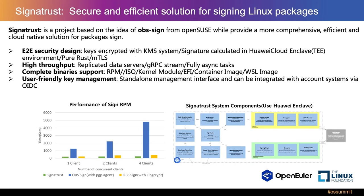Thank you Zhongjun for the excellent content. Now let me bring you to another new project in the community that we are currently working on, called Signatrust. It is aimed at providing a secure and efficient solution for signing Linux packages. It is a project based on the idea of OBS sign from the OpenSUSE community, with much more optimizations added according to our infrastructure team's daily usage and requirements. It provides a more comprehensive, efficient, and quantitative solution for package signing, more suitable for our scenarios. We have done performance tests and our new design is much more efficient, and we are now using it in OpenEuler infrastructure.